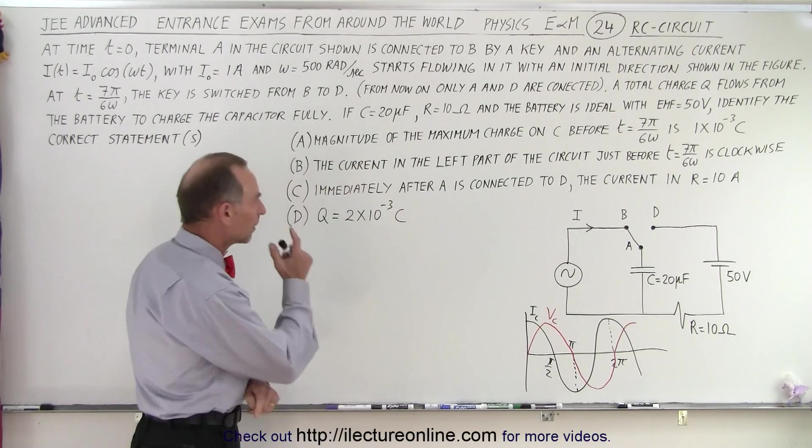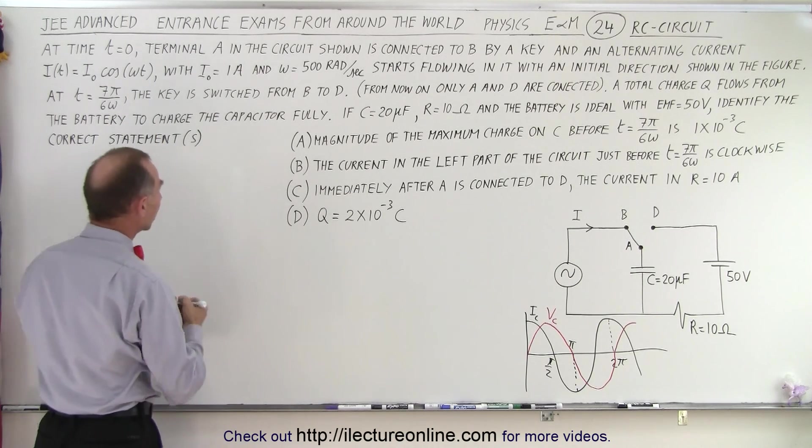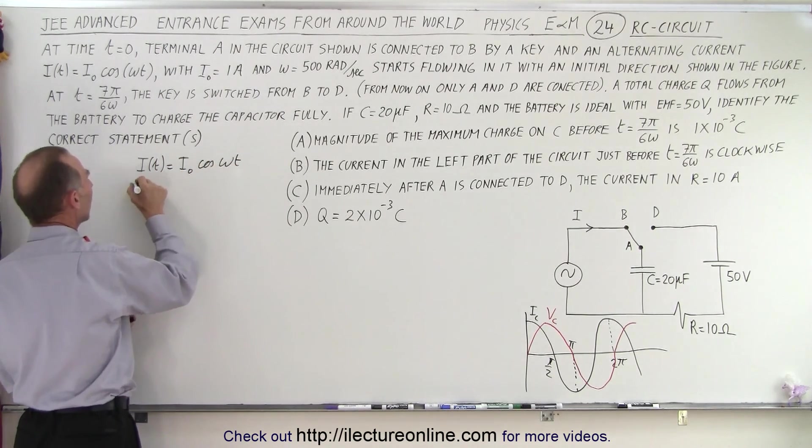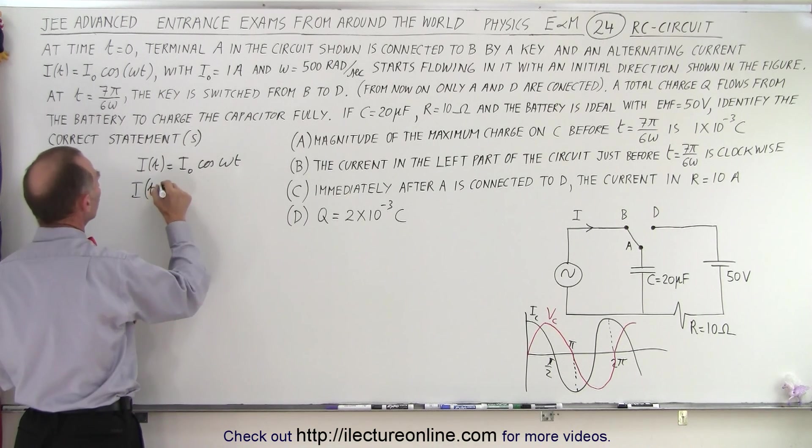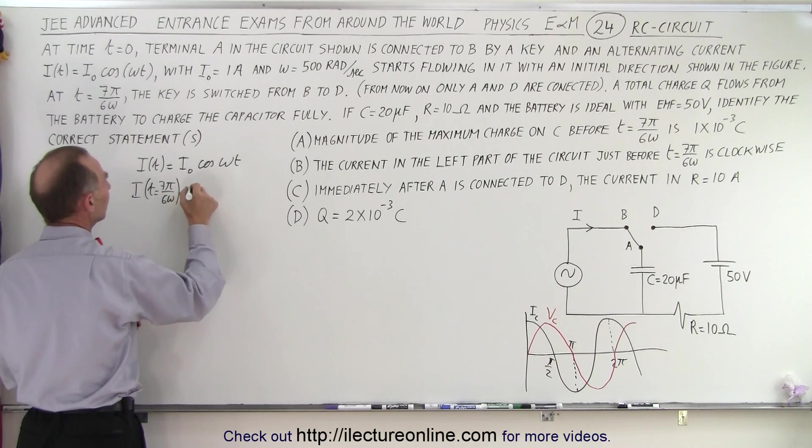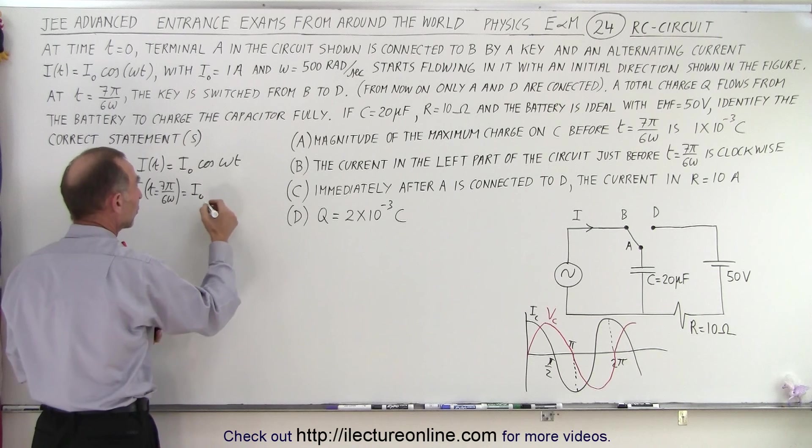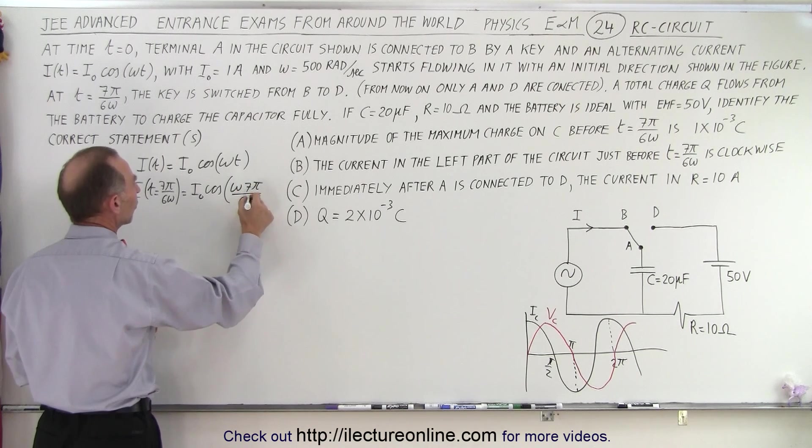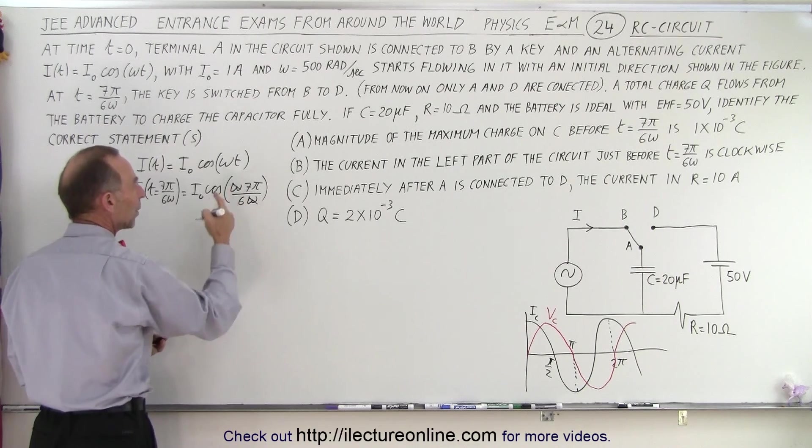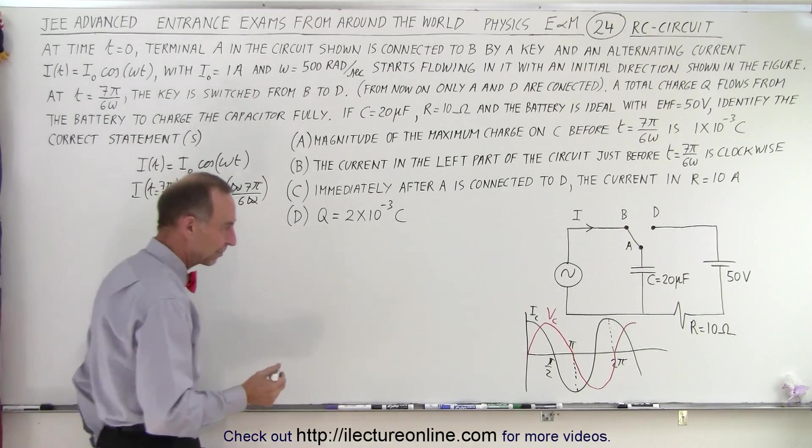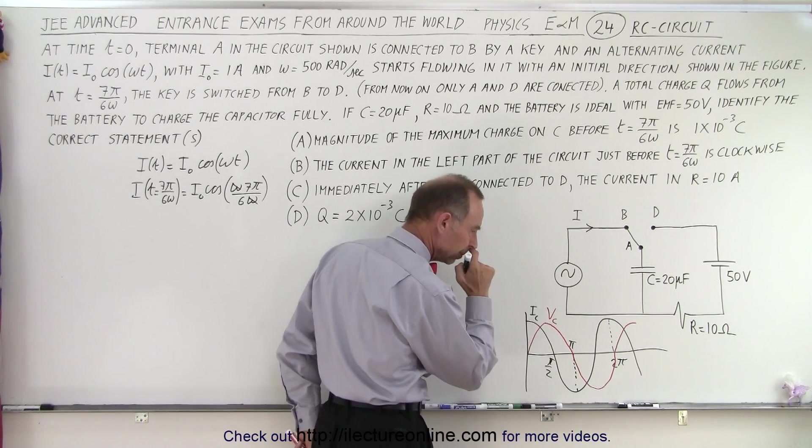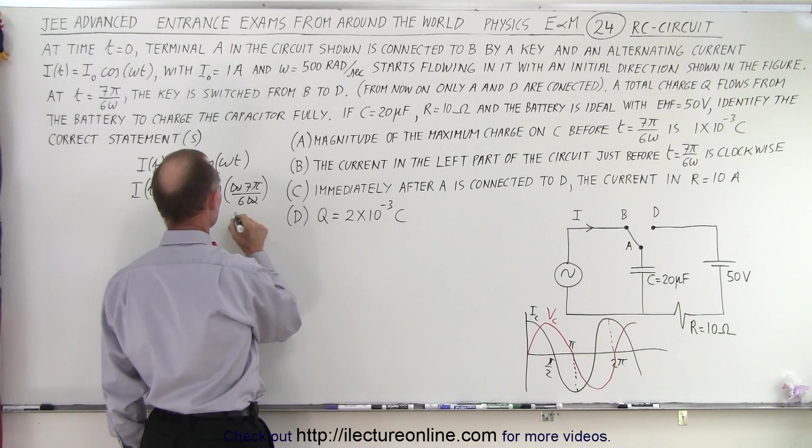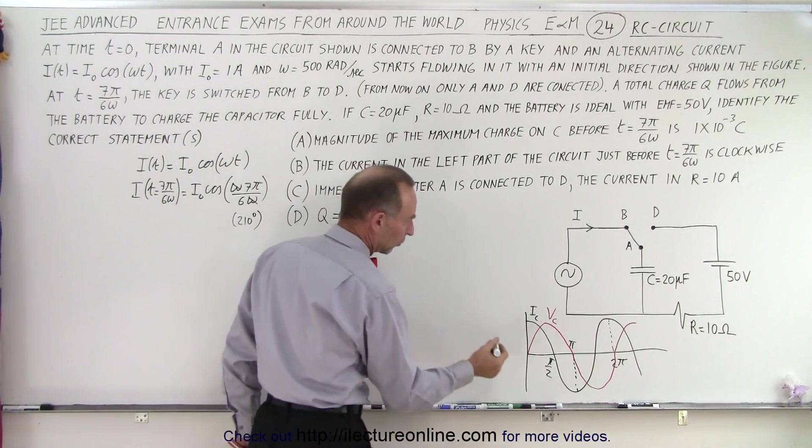So what does this time indicate? Let's plug that into the equation. We have i as a function of time is equal to i sub naught times the cosine of omega t. So i when t is equal to 7 pi over 6 omega is equal to i sub naught times the cosine of omega times 7 pi over 6 omega. Notice that the omegas cancel out. And we're at 7 pi over 6. So where is that on our graph? 7 over 6 pi, that's 210 degrees.